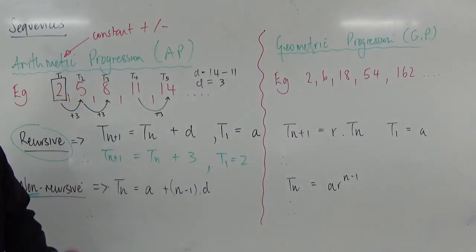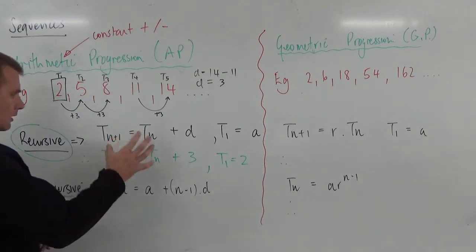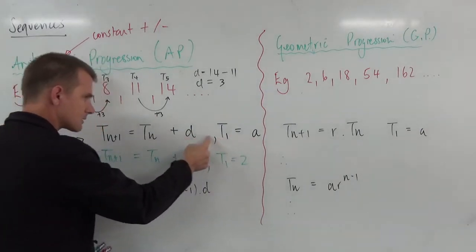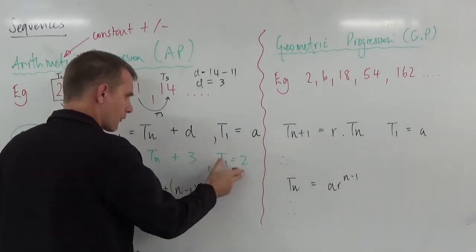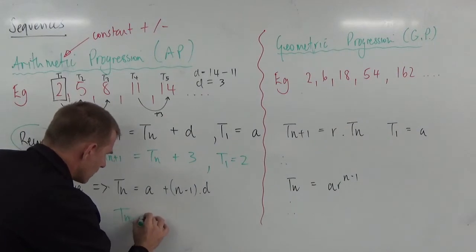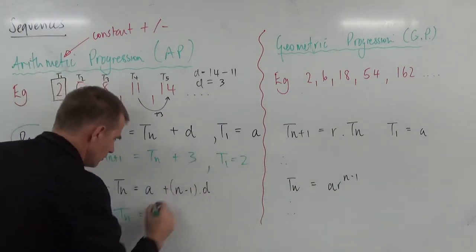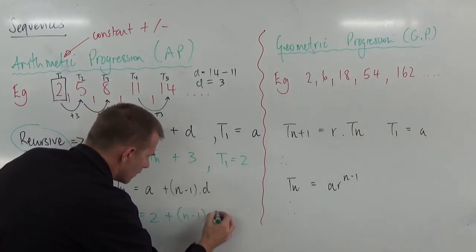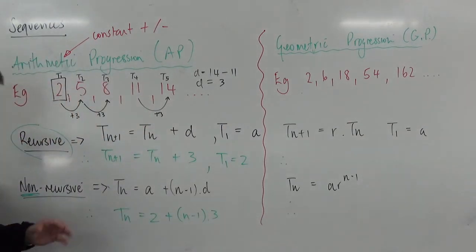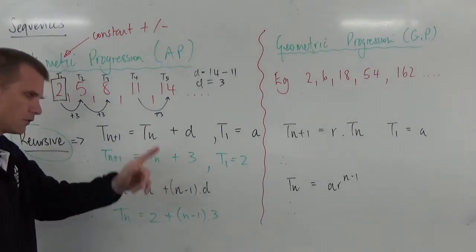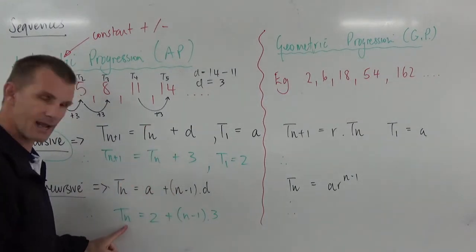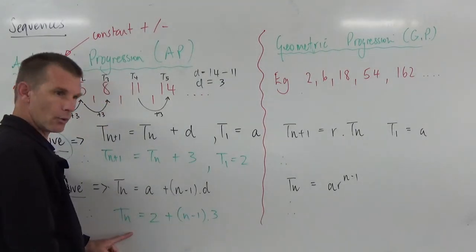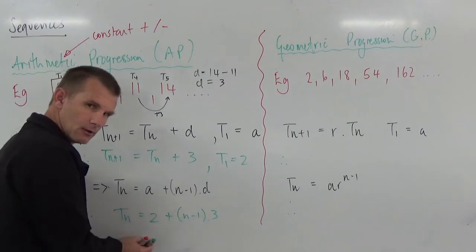Here we go. This is our formula. We just take the same numbers that we've got here. So the 3 and the 2, let's put them in. T_n equals 2 plus (n-1) times 3. Now, the advantage of this formula is if you say I want to get to step 10, you just put 10 in here and calculate. You want to get to step 15, put 15 in, calculate. So you can jump straight to where you're going.